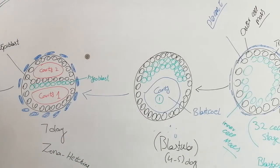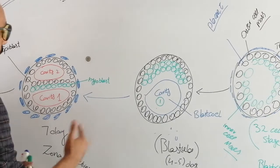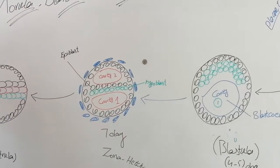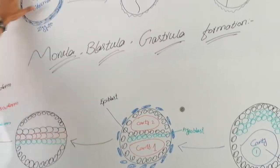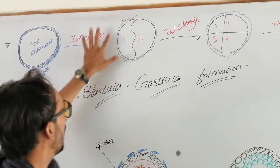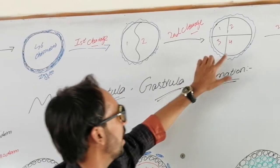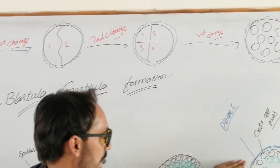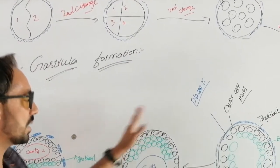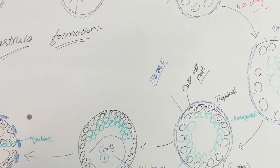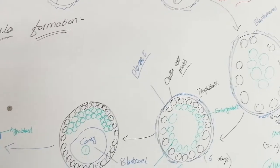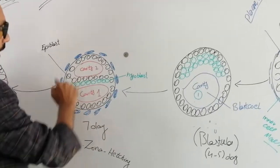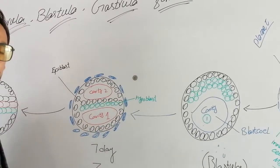At the 6th to 7th day, we proceed further. As noted earlier, the zona pellucida surrounds the zygote, the 2-cell stage, the 4-cell stage, the 8, 16, and 32-cell stages — it surrounds all these structures throughout development. At the 7th day after fertilization, the zona pellucida will begin to disappear from these cells.